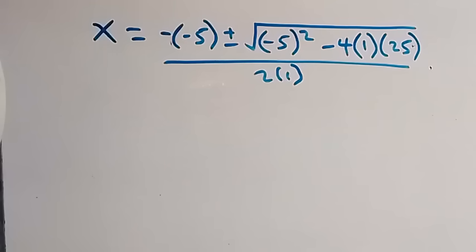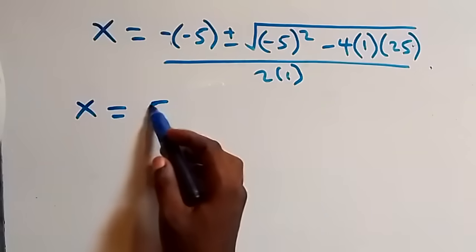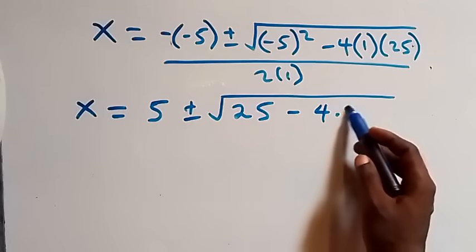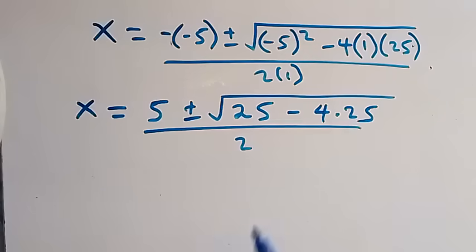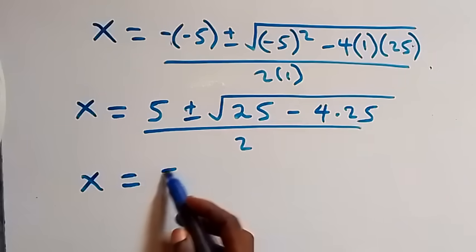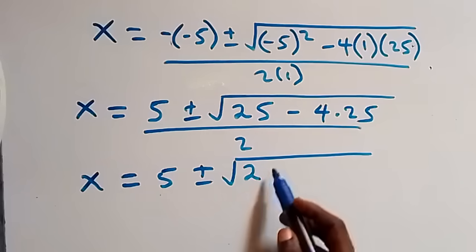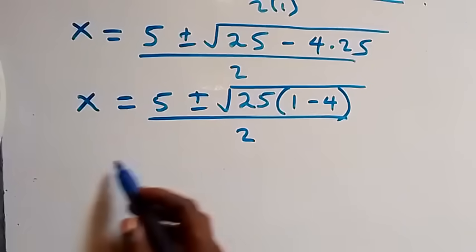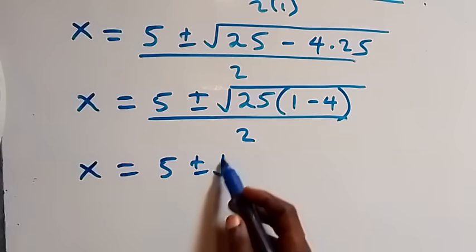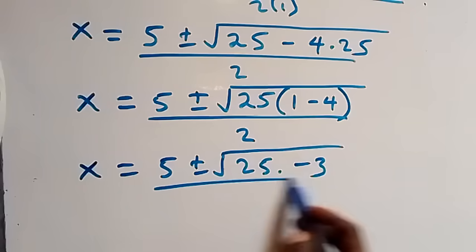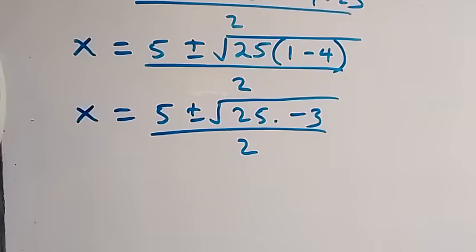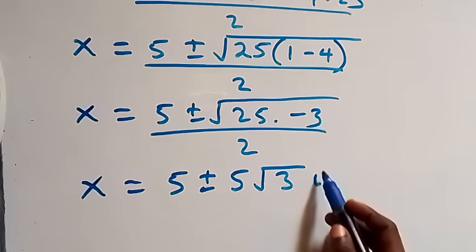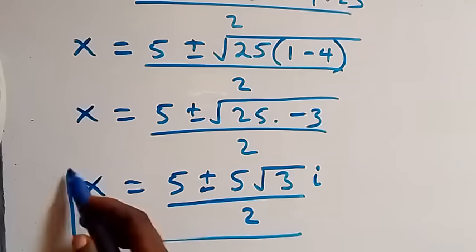Simplifying: x = (5 ± √(25 − 100)) / 2 = (5 ± √(25·(1 − 4))) / 2 = (5 ± √(25 · (−3))) / 2. Separating the root, √25 = 5, and √(−3) = i√3, so x = (5 ± 5i√3) / 2. These are two complex solutions from Case 1.